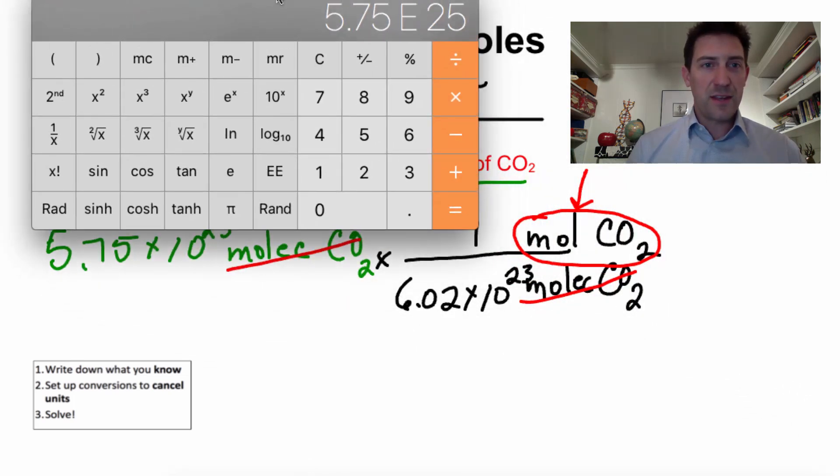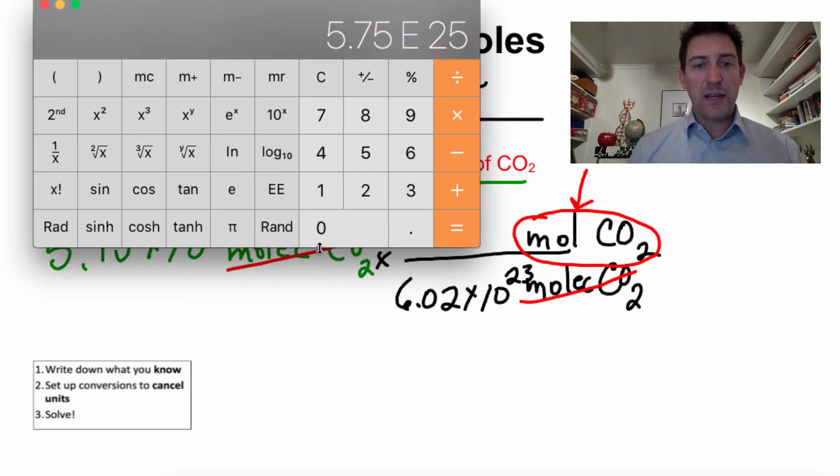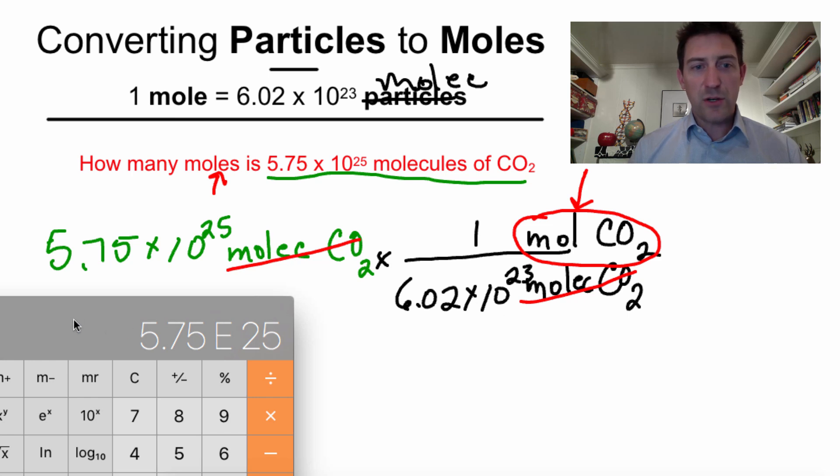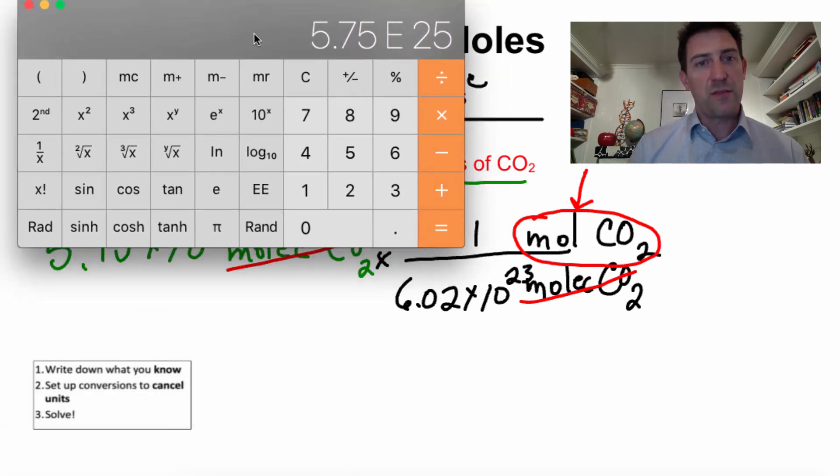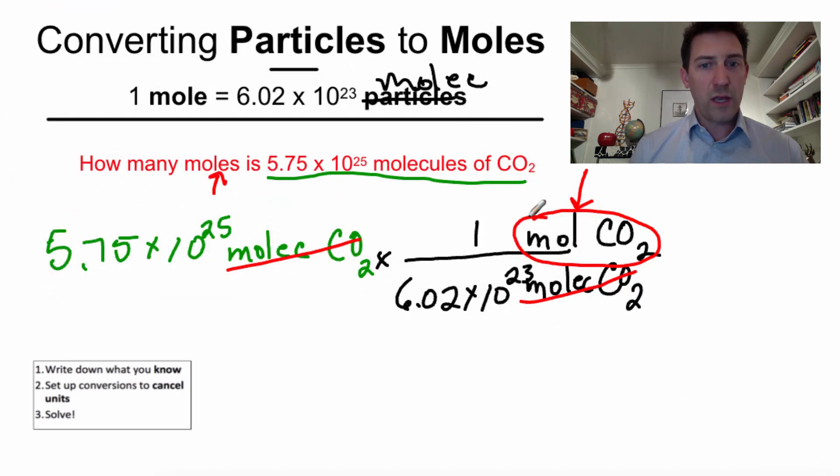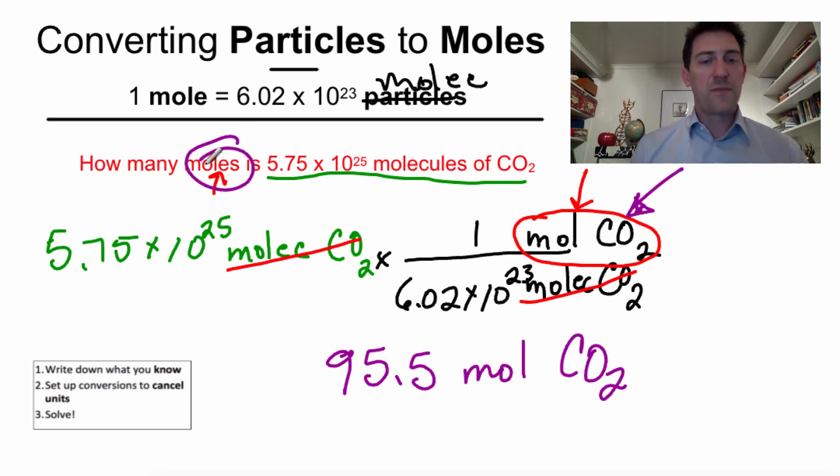We need to divide it by, because we're taking that number right there, times 1 divided by this. But you don't have to do the times 1. You can just literally go straight to the divided by. So, I'm going to hit divided by 6.02. 6.02 EE means times 10 to the 23rd. Hit equals. It looks like I have 95.5. And what am I working in? Moles of CO2. So, I had 95.5 moles of CO2. How do I know that's the units I use? Well, that's all I have left and that's what I wanted the answer in.